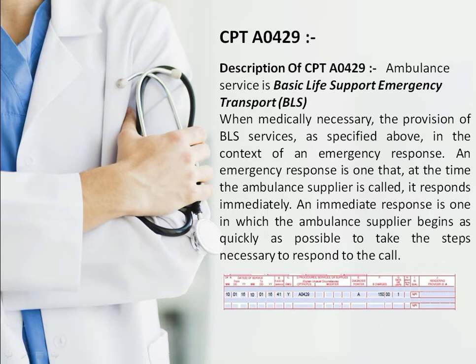CPT code A0429 is Basic Life Support (BLS) emergency transport. It covers the provision of BLS services in the context of an emergency response — meaning when the ambulance service is called, they respond immediately and take the patient to the nearest hospital as quickly as possible. Necessary equipment available includes a glucometer, defibrillator, aspirin, pulse oximeter, oxygen mask, and spinal immobilization equipment.